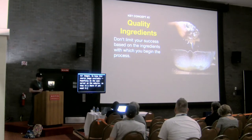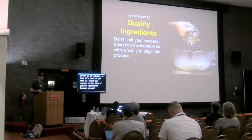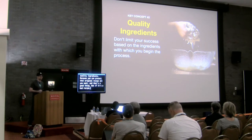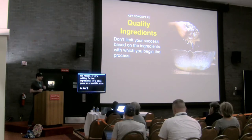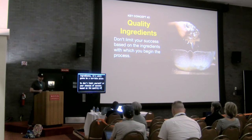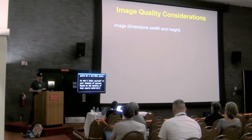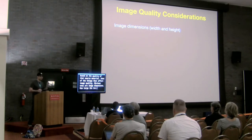The second key concept is the idea of quality ingredients. Because you can protect that original recipe all you want — that's a good thing — but if it's a bad recipe calling for bad ingredients, it's still going to be a terrible pizza. So don't limit yourself based on the quality of that source material. Some of the things that affect image quality: obvious ones are image dimensions — how large the image is, how much actual resolution you have. If you're starting with a thumbnail-size image from the start, you're kind of behind the eight ball.